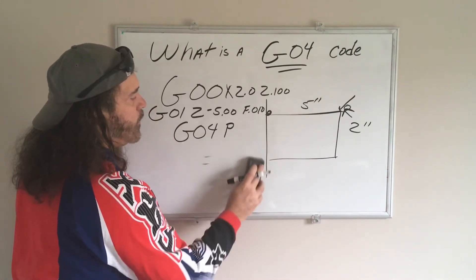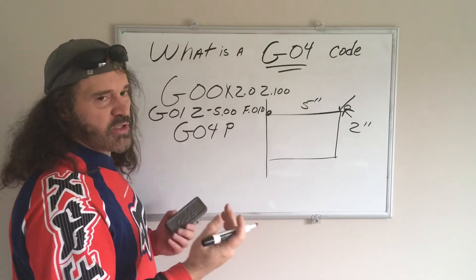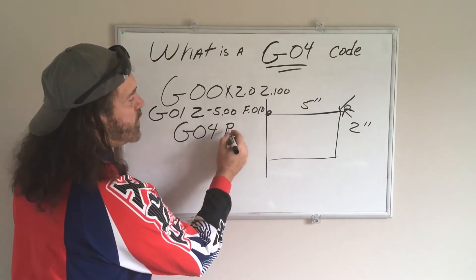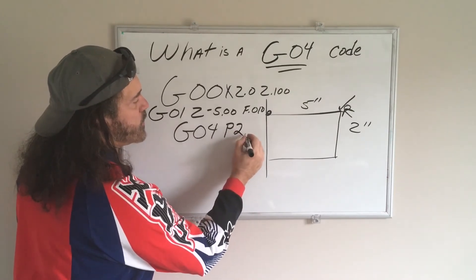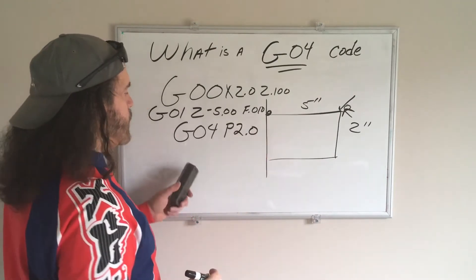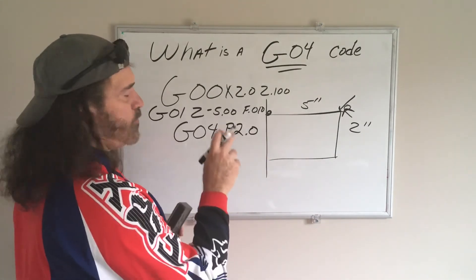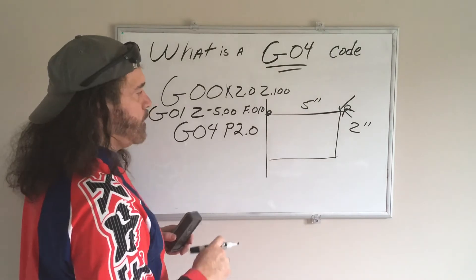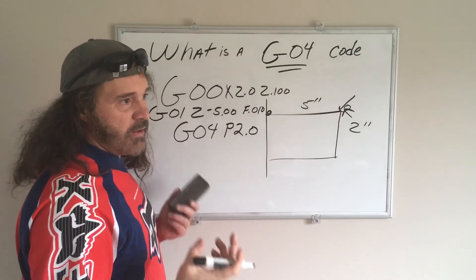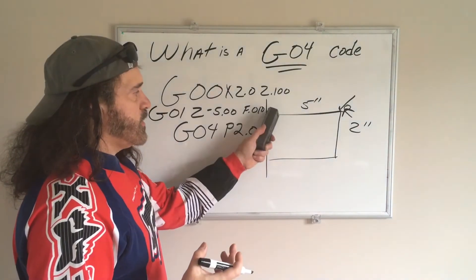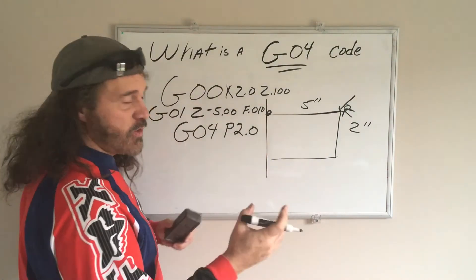So, I want it to stay there, say for two seconds. So you put the P code, 2.0. So it's G04, P, 2.0, and that's going to dwell slash sit there for two seconds.